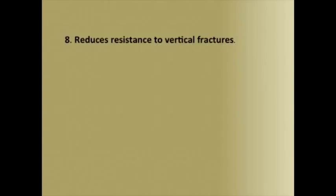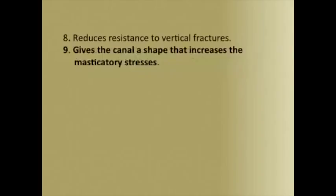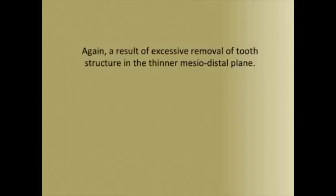When tooth structure is excessively removed in the mesiodistal plane in teeth where the pulp is very thin even in that plane, the roots become weaker. The greater the degree of canal taper, the more occlusal forces concentrate masticatory stresses coronally — not unlike a tapered cast post. It simply makes more sense to preserve coronal tooth structure and limit the degree of taper. Once again, the increased taper that increases safety for the instruments weakens the teeth, particularly in the mesiodistal plane. We must get away from canal preparations designed for the safety of the instruments, yet at the same time we must fully debride the canals in three dimensions.